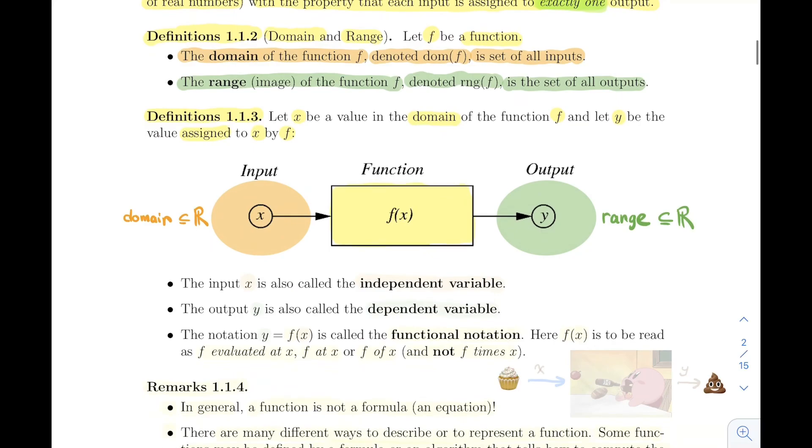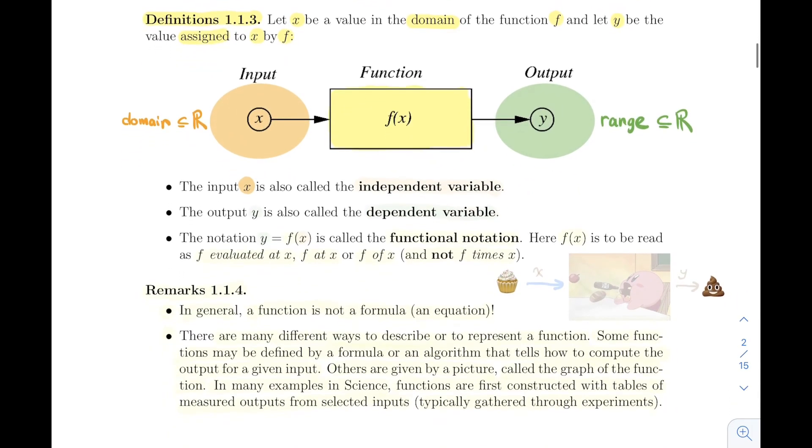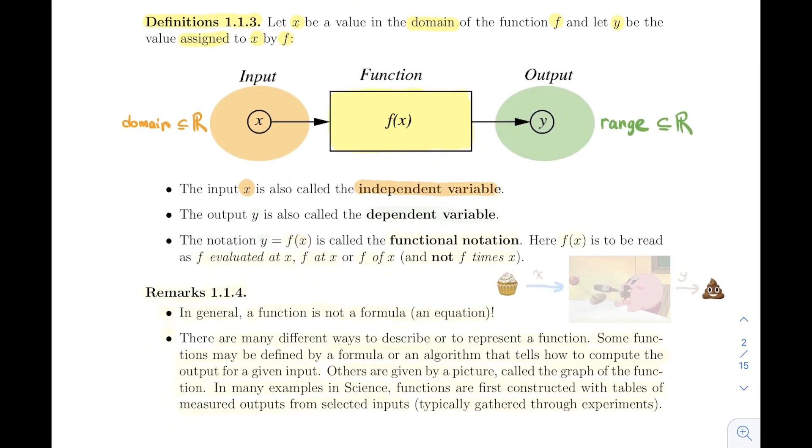Next, the input x is also known as the independent variable, and the output y is also known as the dependent variable. This is something I'll be using a little bit - that box visualization of a function where x goes in the box, something happens in the box, and then something comes out.